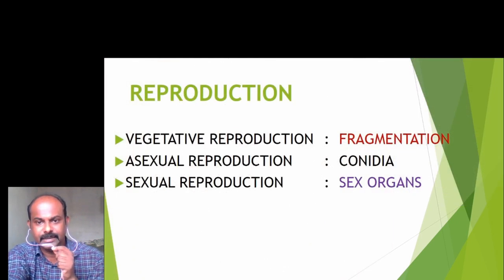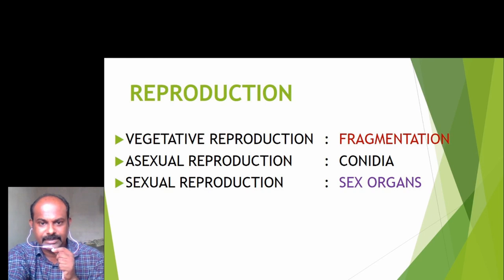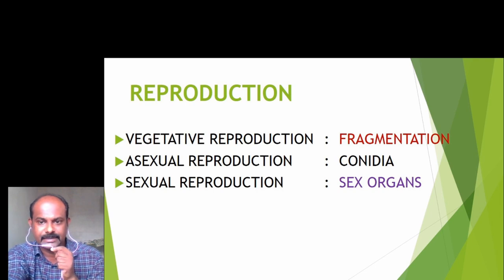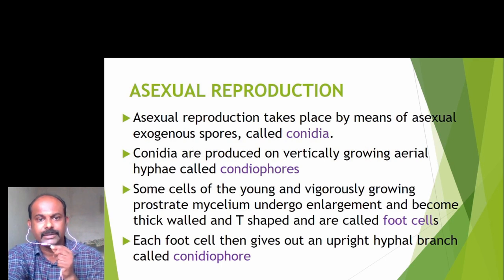Regarding reproduction, vegetative reproduction occurs by the most common means, that is fragmentation. The mycelium breaks into small pieces and each piece is capable of growing into a new mycelium. Asexual reproduction takes place by the formation of conidia on conidiophores. Sexual reproduction is a rare phenomenon in Aspergillus and occurs by means of specialized sex organs. Asexual reproduction occurs by the formation of exogenous spores called conidia.